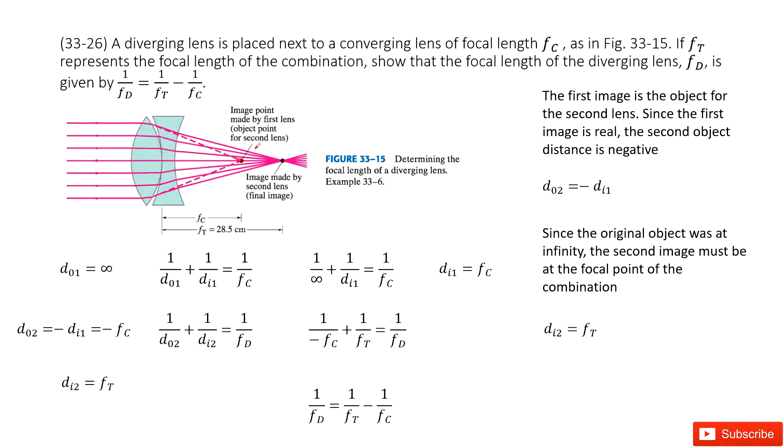So one thing, the first thing we can see, the first image is the object for the second lens, so just this point. And at this point we can see, because since the first image is real, the second object distance should be negative.